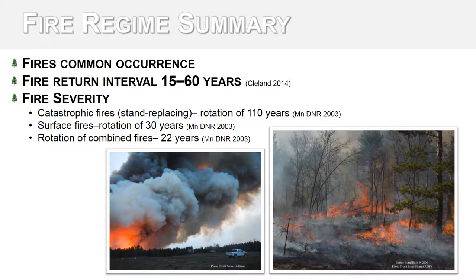Historically, fires were common throughout dry jack pine forests. Public land surveys indicate that the rotation of catastrophic intense stand replacing fires was about 110 years, and the rotation of surface fires or low intensity fire was about 30 years. The combined estimate of all fires happened on a rotation of about 22 years. According to Land Fire, the fire return interval is estimated to be between 15 to 60 years. More research is needed on the frequency of historical surface fires, but the rotation of intense fires has helped jack pine stands regenerate naturally.